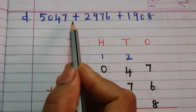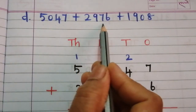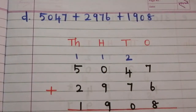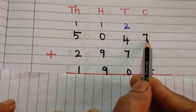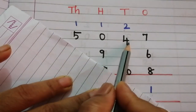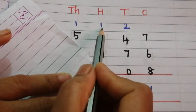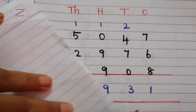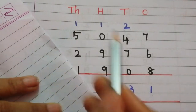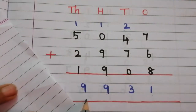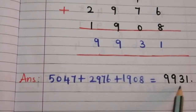Problem D: 5,047 plus 2,976 plus 1,198. Ones: 8 plus 6 is 14, 14 plus 7 is 21 — put 1, carry 2. Tens: 7 plus 4 is 11, 11 plus 2 is 13 — put 3, carry 1. Hundreds: 9 plus 1 is 10, 10 plus 9 is 19 — put 9, carry 1. Thousands: 2 plus 1 is 3, 3 plus 5 is 8, 8 plus 1 is 9. The answer is 9,931.